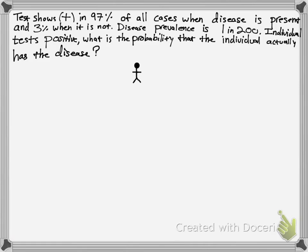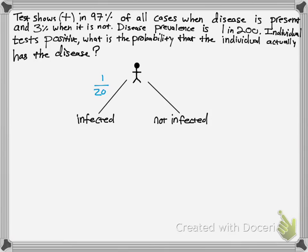For the next problem: the test shows positive in 97% of all cases when the disease is present, and 3% of the time when it's not. The disease prevalence is 1 in 200. The individual tests positive. What is the probability that the individual actually has the disease? Let's set up a tree diagram, which is easier to comprehend, especially for those not too familiar with Bayes' theorem. The prevalence is 1 in 200 if infected, meaning 199 out of 200 people don't have the disease.